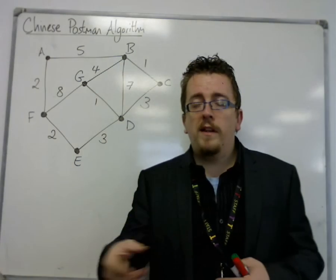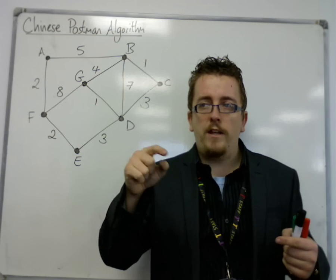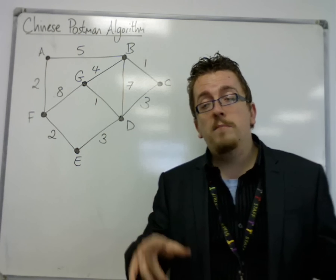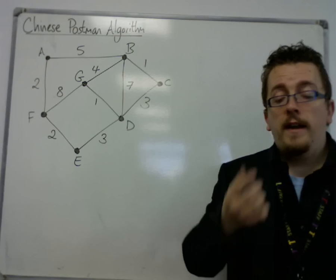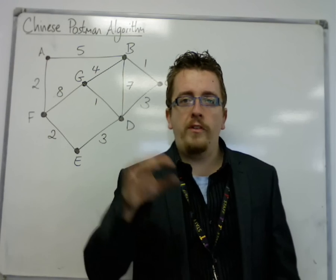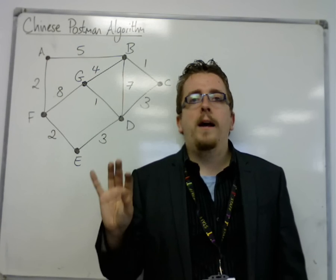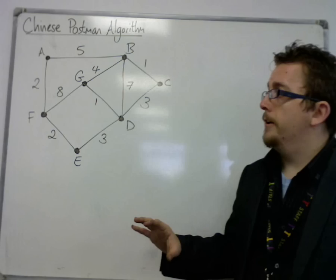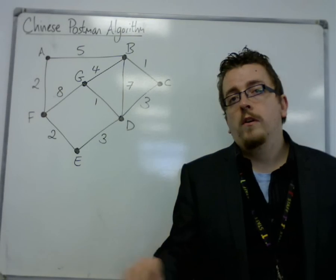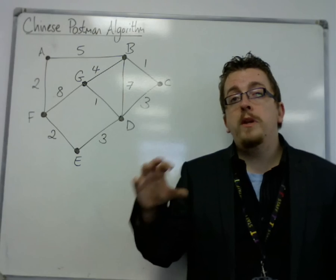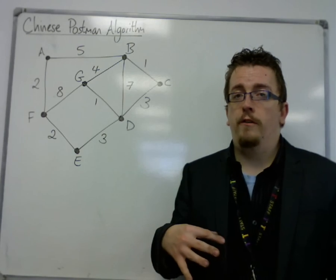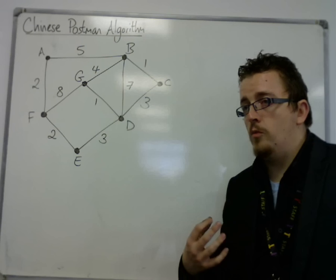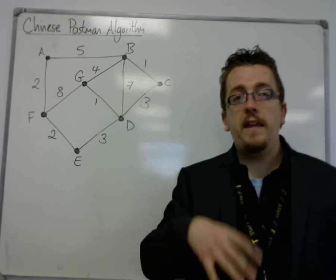This idea of travelling along each edge precisely once and getting back to where you started is a problem that I introduced in one of the earlier videos, where I introduced graph theory. In that section, what we're talking about here is that we want an Eulerian graph.